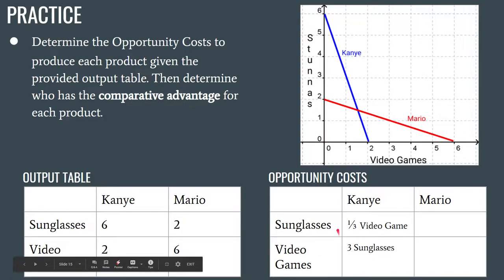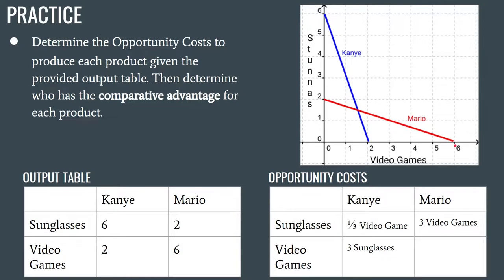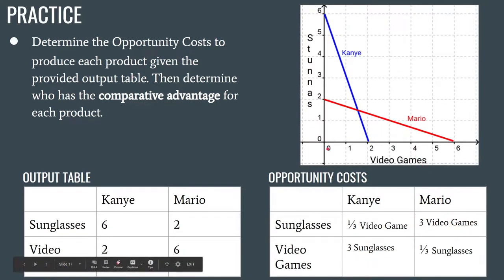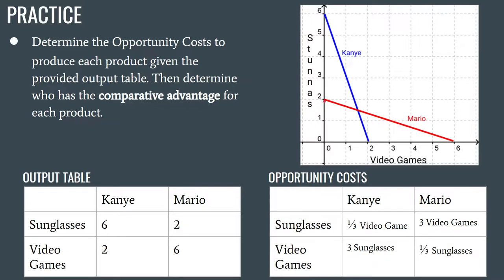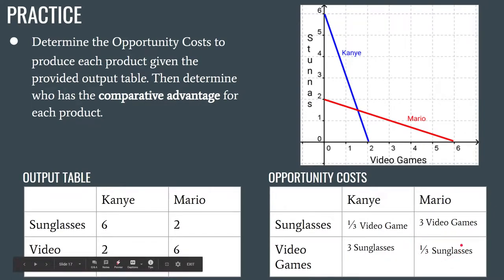For Mario, every time he produces a pair of sunglasses, he gives up three video games. Starting at six video games and moving up to one pair of sunglasses, he goes down three video games. Conversely, every time he gives up one-third of a pair of sunglasses, he gains one video game. So Mario's opportunity cost per pair of sunglasses is three video games, and his opportunity cost per video game is one-third of a pair of sunglasses.